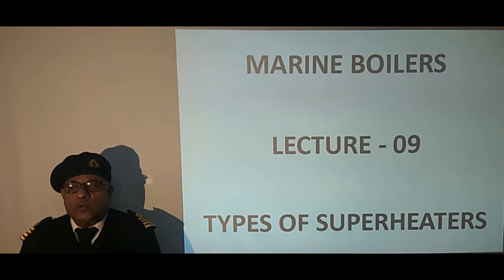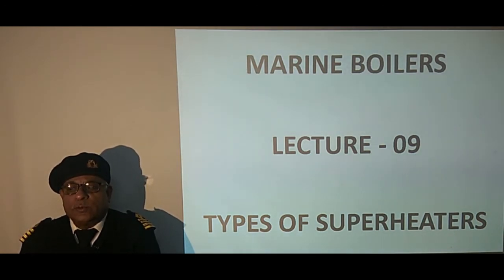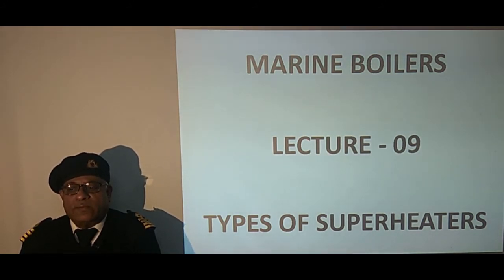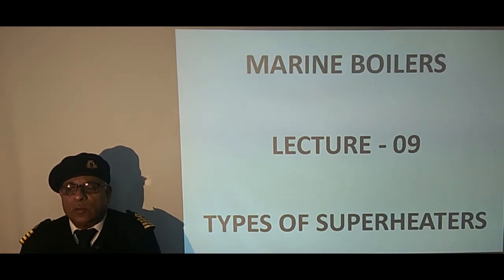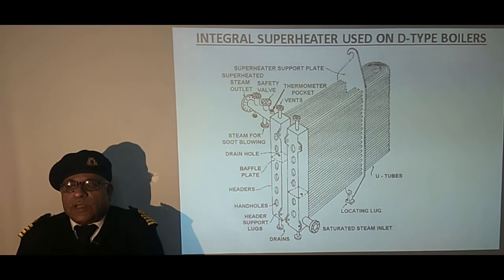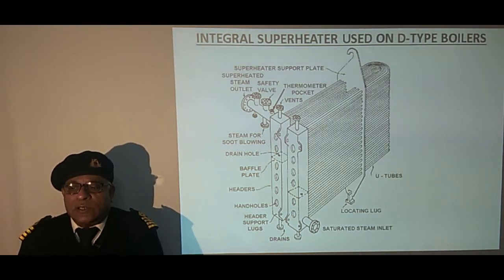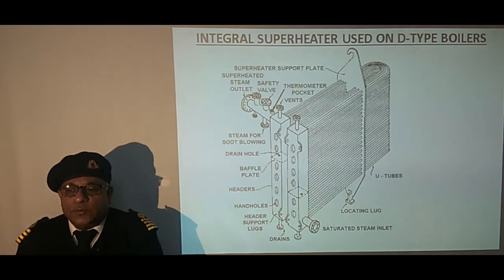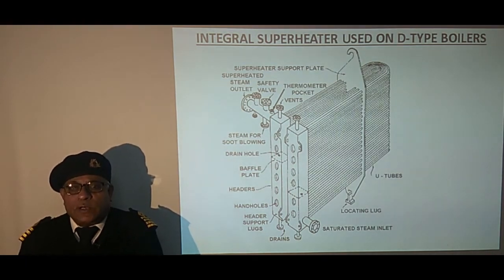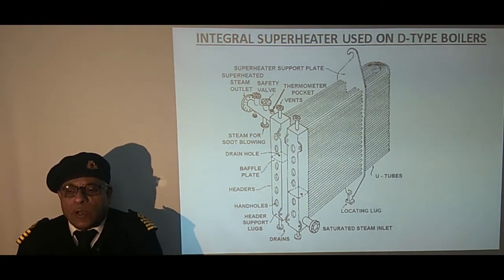Integral superheaters are close to the furnace and sandwiched between generating tubes. On the other hand, external superheaters are fitted on the exhaust side and are well protected against overheating. This sketch shows an integral superheater used on D type boilers, placed between generating tubes and secured with superheater support plate and header support lugs.